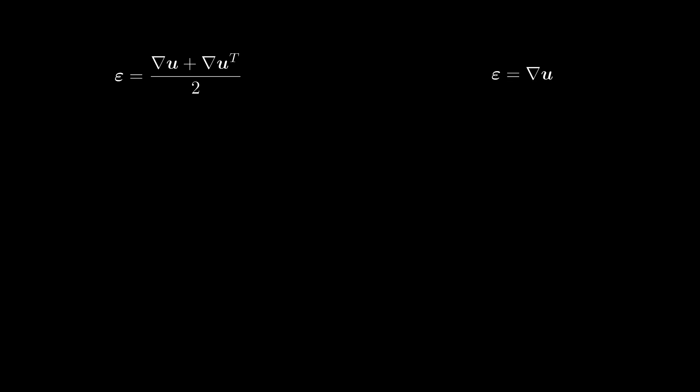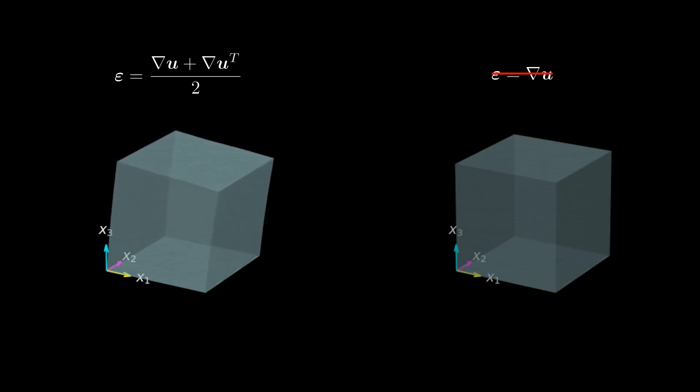Well, it turns out that this would result in some unphysical behavior. Take for example this simulation, where I apply some displacement in x1 direction to the top of a solid cube. If I run the same simulation but with the wrong definition for the strain tensor, the results look much less realistic. In this video you will learn why.